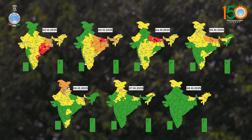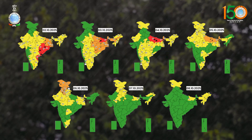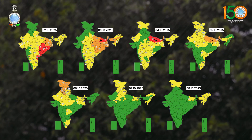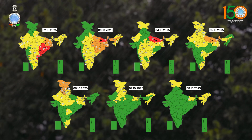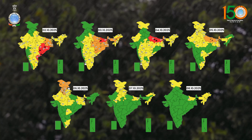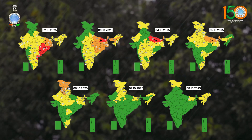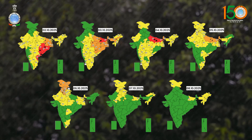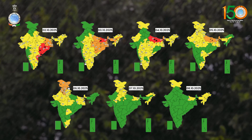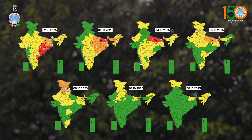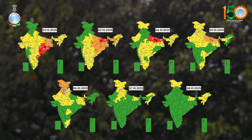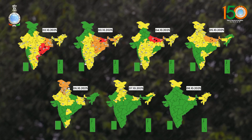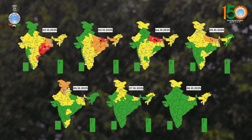For 3rd October, orange warnings are issued for East Uttar Pradesh, East Madhya Pradesh, Chhattisgarh, Odisha, Jharkhand, Gangetic West Bengal, Sub-Himalayan West Bengal and Sikkim, and Assam and Meghalaya, where heavy to very heavy rainfall at one or two places is expected.